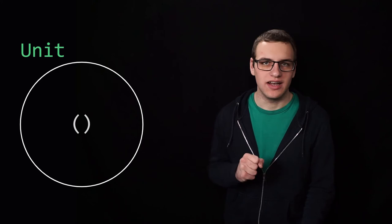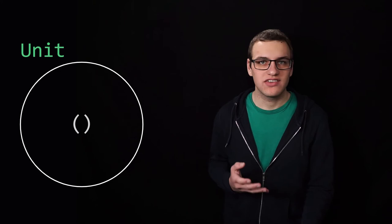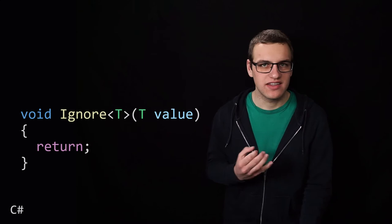So if we can think about types like sets of possible values, then would there be a singleton set as a type? So a set with just one value in it? And there actually is, and this is the type we call unit. So the unit type contains exactly one element, and it is denoted by this pair of parentheses.